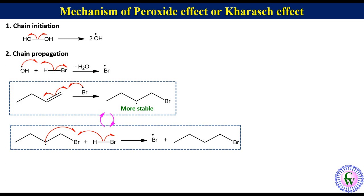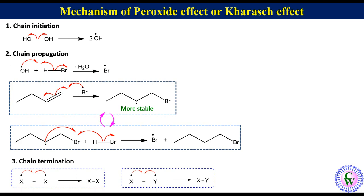Step 3: Chain termination. Any two radicals combine together and destroy the radical.